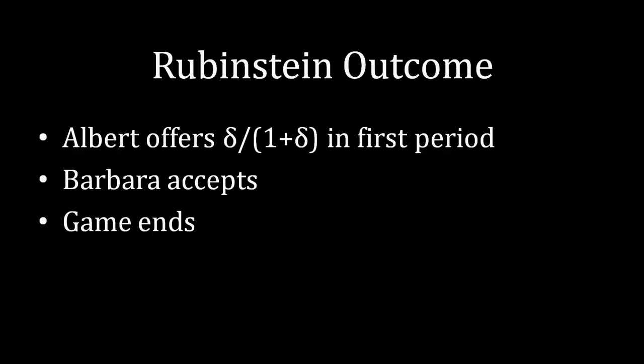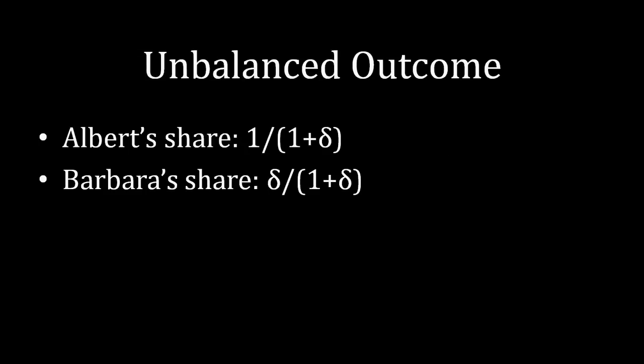Well, the critical thing is that the proposer in the first stage, the guy who has the first offer, is going to be doing better than the person who has the second offer. We see this by actually looking at what the payoffs are in the game. Barbara's payoff is very easy to calculate. She's accepting an offer of δ/(1+δ), so we know that that is her payoff.